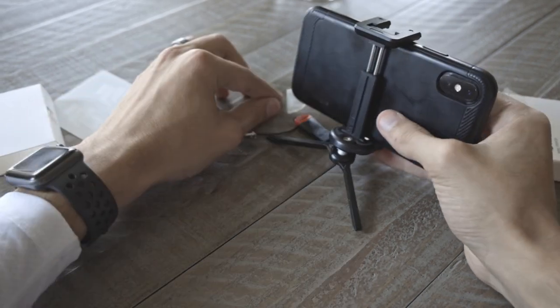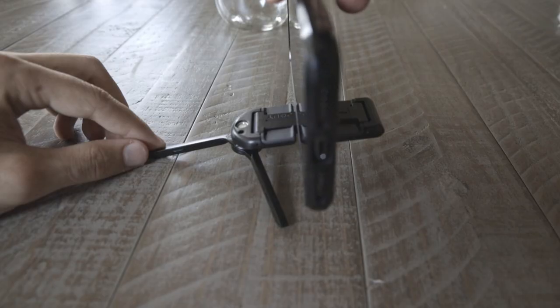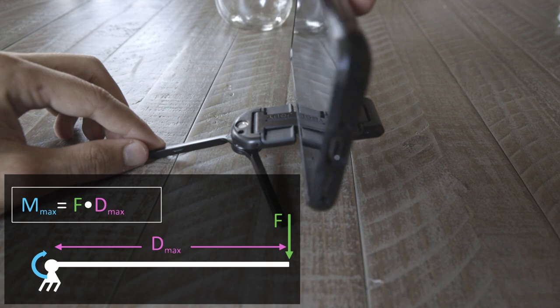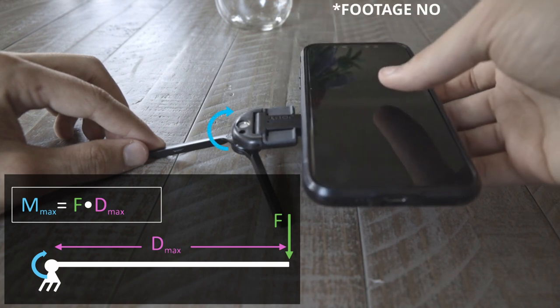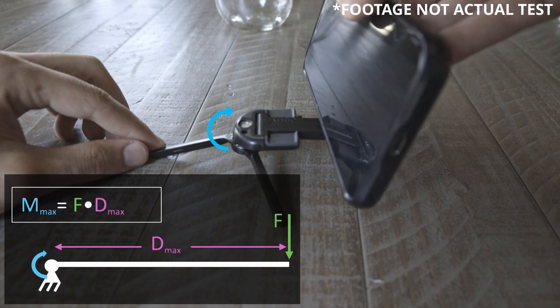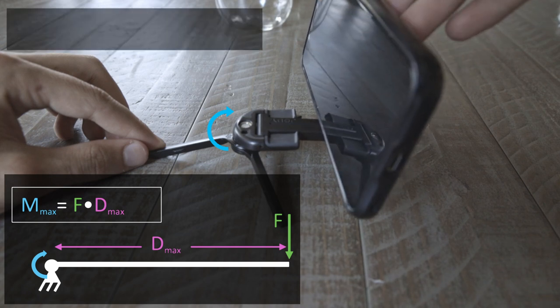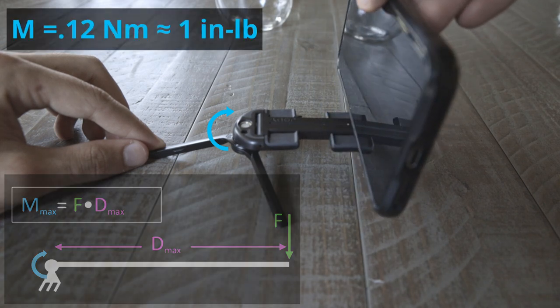I wanted to find the weight limit for this mount, but that is typically an irrelevant value, so I did some quick calculations to find the max moment on the ball joint before the stand fell. By using the distance and the weight of the phone, I was able to measure the max moment, which was about 0.12 newton meters, or 1 pound per inch.